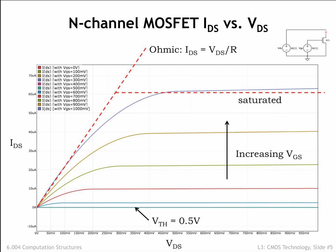But when VDS gets larger than VGS, the channel pinches off at the drain end, and as we see on the right side of the IDS plots, the current flow no longer increases with increasing VDS. Instead, IDS is approximately constant and the curve becomes a horizontal line. We say that the MOSFET has reached saturation, where IDS has reached some maximum value. Notice that the saturated part of the IDS curve isn't quite flat, and IDS continues to increase slightly as VDS gets larger. This effect is called channel-length modulation, and reflects the fact that the increase in channel pinch-off isn't exactly matched by the increased current induced by the larger VDS.